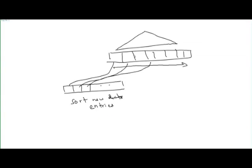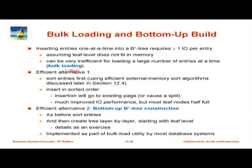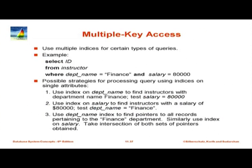If building a B+ tree fresh, there is a further optimization: sort all the entries to be created and then build the upper layers of the tree in a special process called bottom-up construction. This is called bulk loading and bottom-up B+ tree construction. I wanted to expose you to the term — you can read it up later.